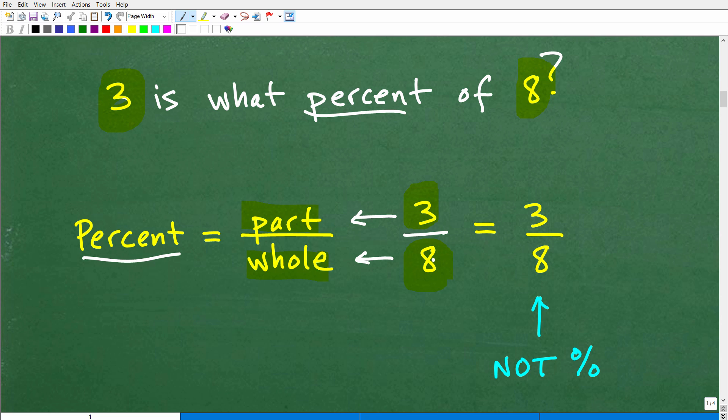Well, you could write a fraction 3/8. That's pretty good, but here's the deal: after we set this up, 3 is a part and 8 is the whole, we have the fraction 3 over 8, but this is not percent.